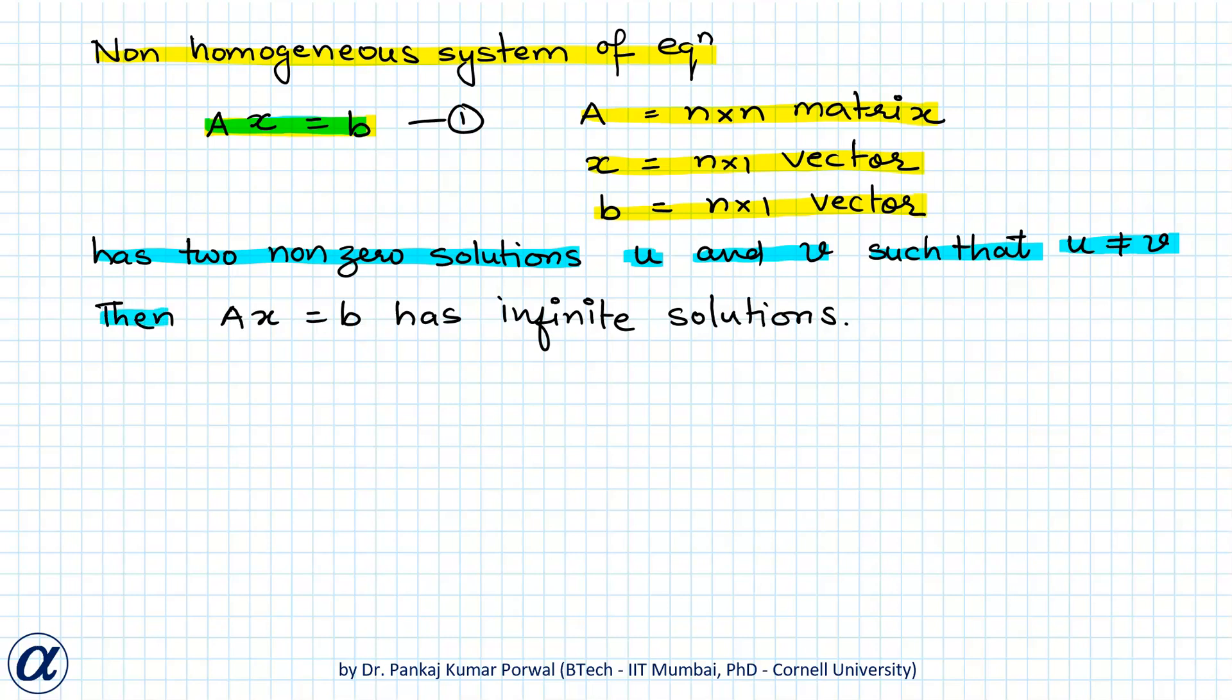then the system AX equals B has infinite solutions. In other words, a non-homogeneous system of equations AX equals B can either have a unique solution or infinite number of solutions. Any intermediate situation of having more than one finite solution is not possible. So if we can show that AX equals B has more than one solution, then it will have infinite solutions.